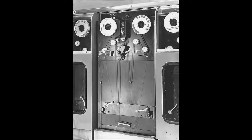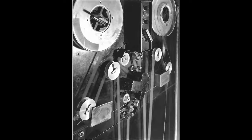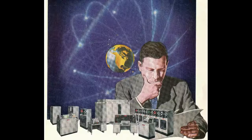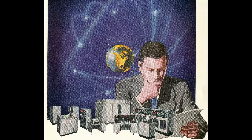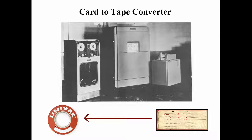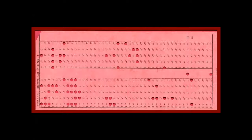Phase encoding was used to record the signal to tape, which had to be written with the tape moving forward. However, the tape itself could be read in either direction. UNIVAC also provided a card-to-tape converter machine, which could handle the input of 240 punched cards per minute. A single UNIVAC tape reel could store data from 20,000 punched cards.